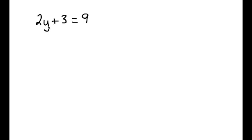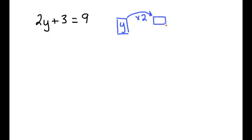We can use what we did in our Geometry Sketchpad lesson to kind of untangle this. First of all, we have a y, and if we follow order of operations, it's being multiplied by two, and that gives us some number, and then whatever that product is, we're adding three to it, and that gives us an output — in this case of nine.